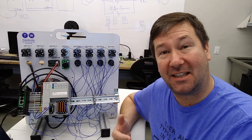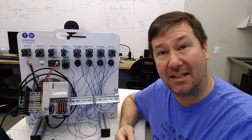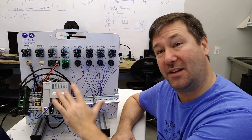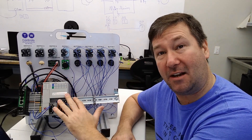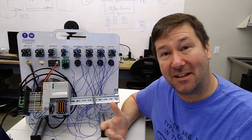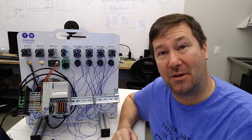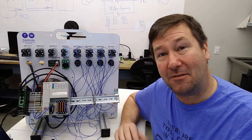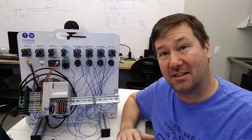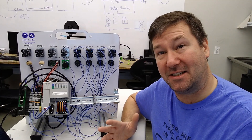Hi, this is Tim. Today we're going to talk about the counter instructions in Studio 5000 for the ControlLogix and CompactLogix PLC. Please take a moment to like this video and subscribe to our channel. We put out at least one automation video a week, and any questions that come up, feel free to put them in the comments. Your question this week could easily be next week's automation topic.